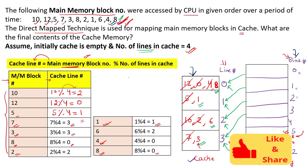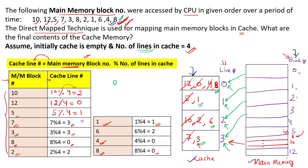We are now done with the mapping of all main memory blocks into the cache lines. The final contents of the cache memory are: block 8 in line 0, block 1 in line 1, block 6 in line 2, and block 3 in line 3. So the final content is 8, 1, 6, and 3. I hope you have understood how we solved this question. If you have any comments or queries, please write in the comment box and do like and share this video.